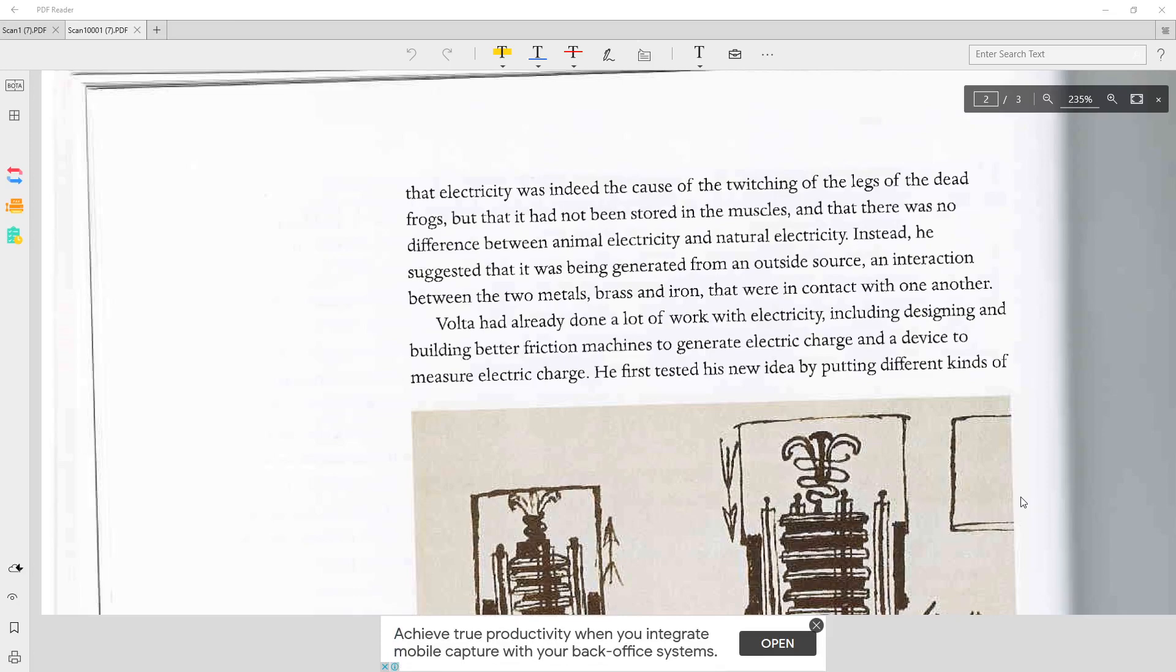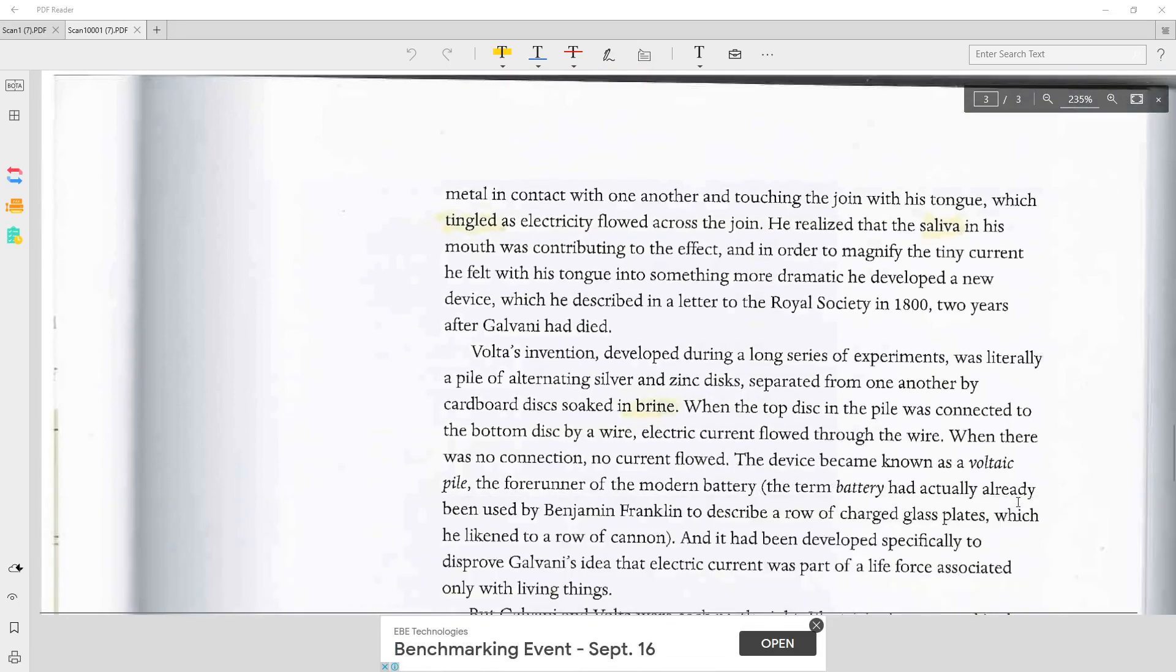Volta had already done a lot of work with electricity, including designing and building better friction machines to generate electric charge and a device to measure electric charge. He first tested this new idea by putting different kinds of metal in contact with one another and touching the joint with his tongue, which tingled as electricity flowed across the joint. He realized that the saliva in his mouth was contributing to the effect, and in order to magnify the tiny current he felt with his tongue into something more dramatic, he developed a new device, which he described in a letter to the Royal Society in 1800, two years after Galvani had died.